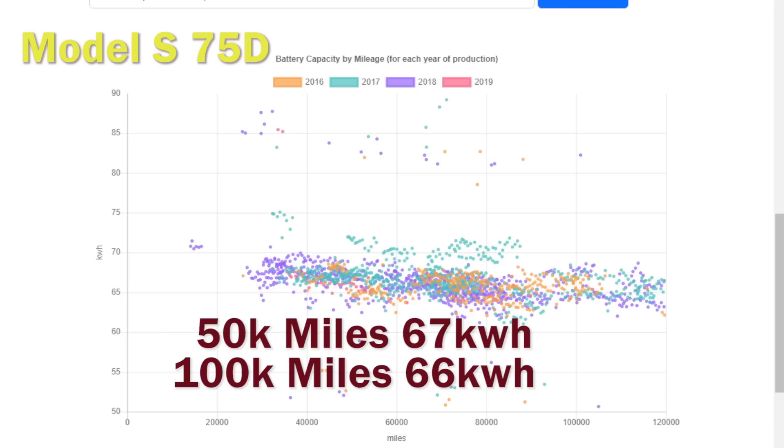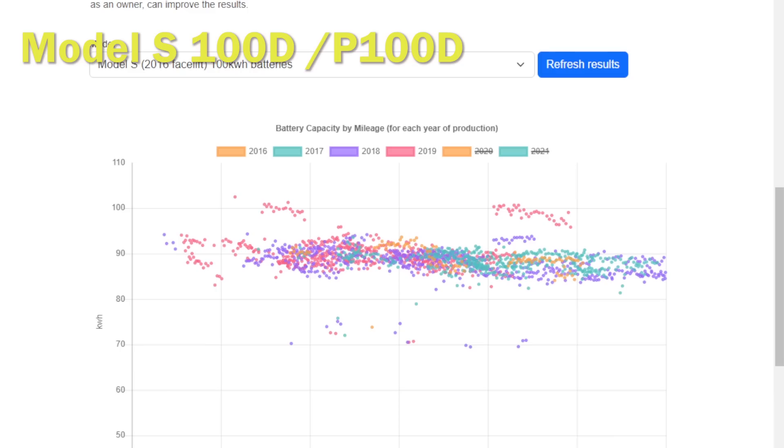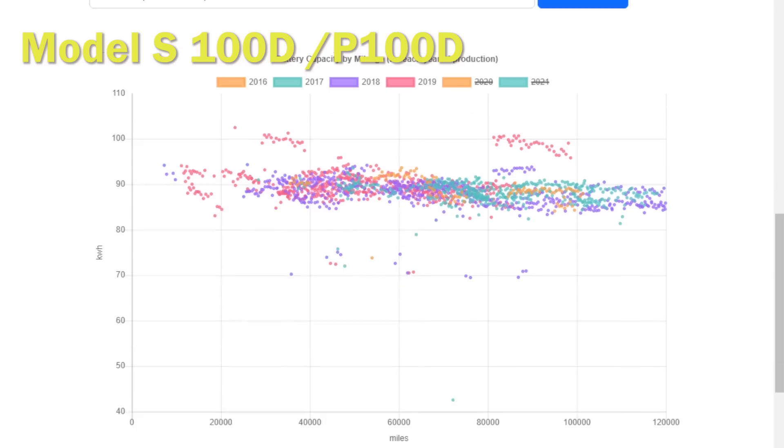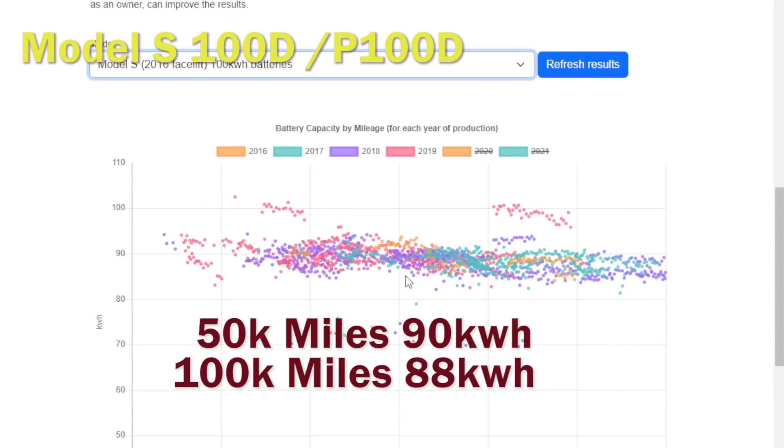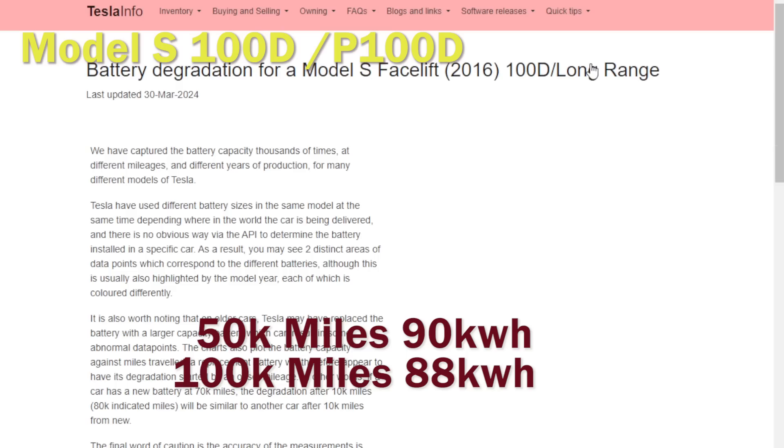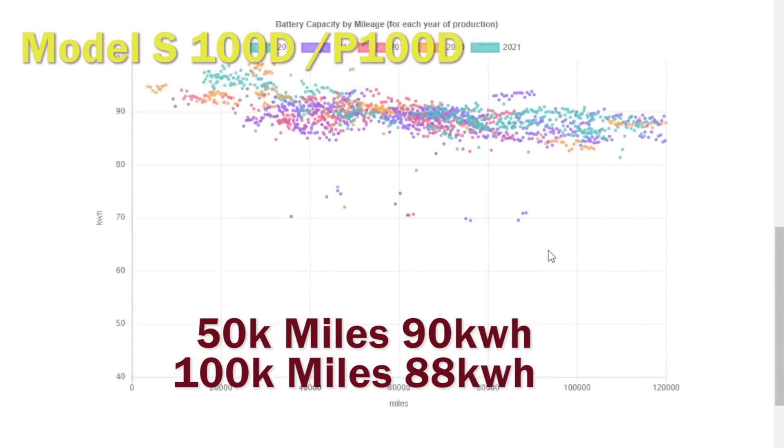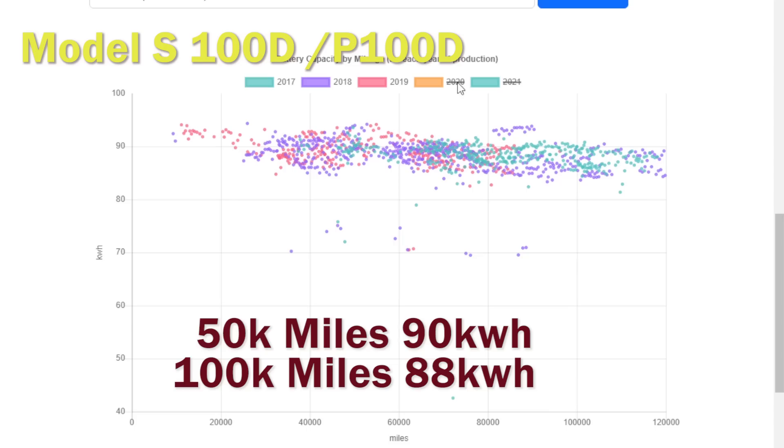Finally, we're going to go back and have a look at the 100 pack batteries in the 100D and the P100D pre the big facelift in around 21. None of these seem to have reported battery capacity close to 100 kilowatt hours other than in very short bursts, and we think these are probably the replacement batteries which quickly degrade to around 92-93 kilowatt hours or at least they report that. At 50,000 miles they're leveling out at 90 kilowatt hours, and in fairness to them they don't lose an awful lot more over the next 50,000 miles down to an average of 88 kilowatt hours.